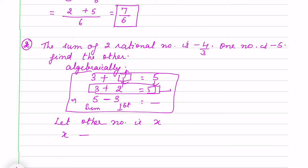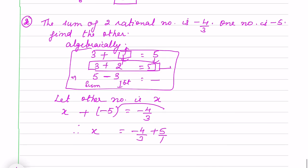x plus first number is -5 and it equals -4/3. So what will be x? -4/3 minus 5, I will take this side. Now we take LCM, -4 plus 15, and so it is 11/3.